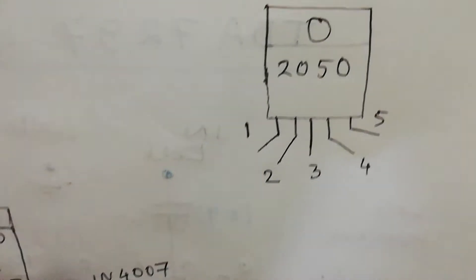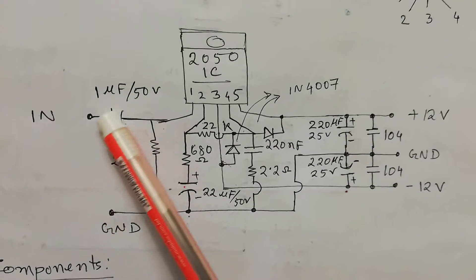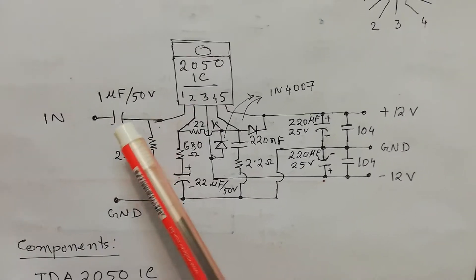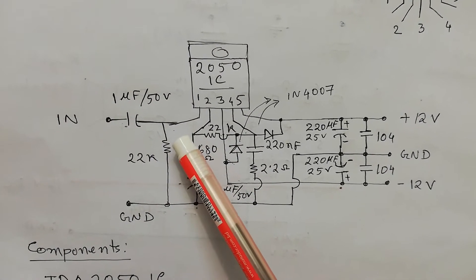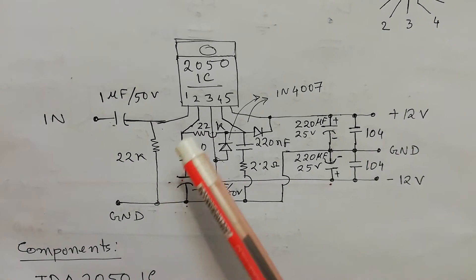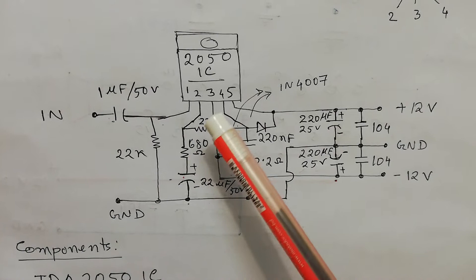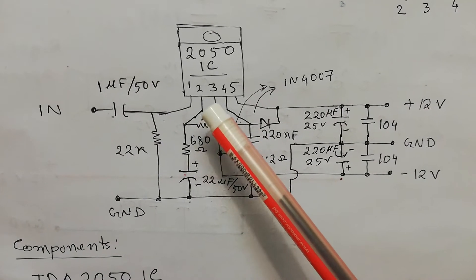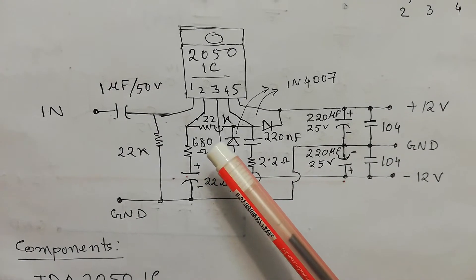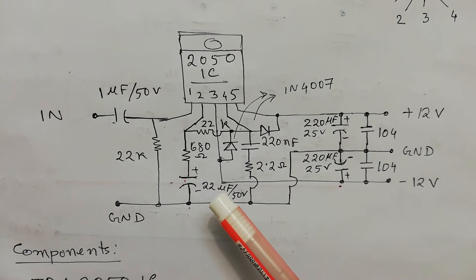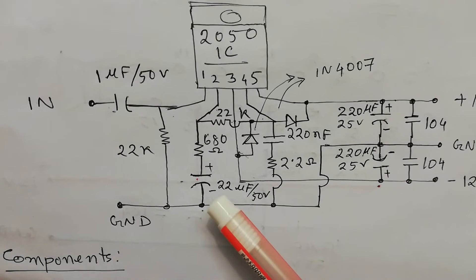If I go to the circuit, I connected one microfarad 50 volt capacitor to pin number one and I used one 22k resistor to the ground in the input section. And here for the inverting input pin number two, I used 680 ohm resistor along with a 22 microfarad 50 volt capacitor and connected to the ground.